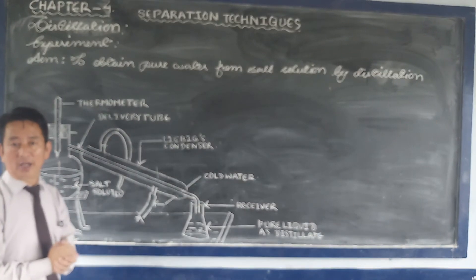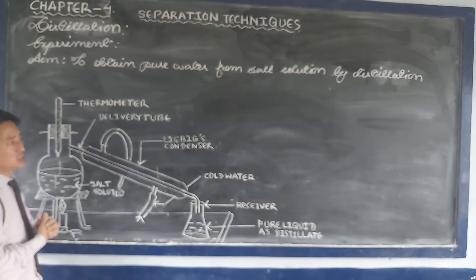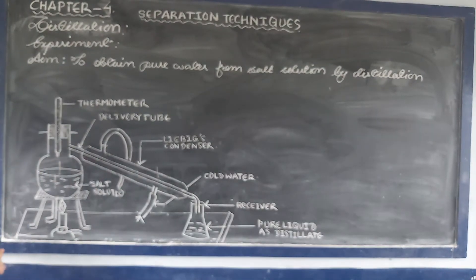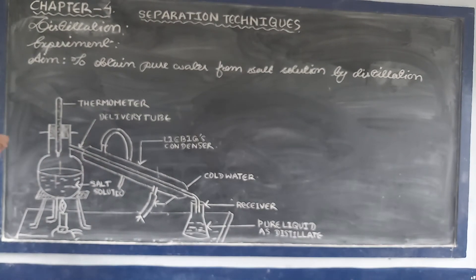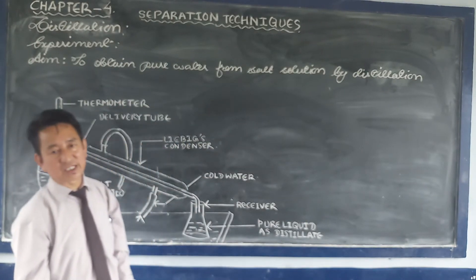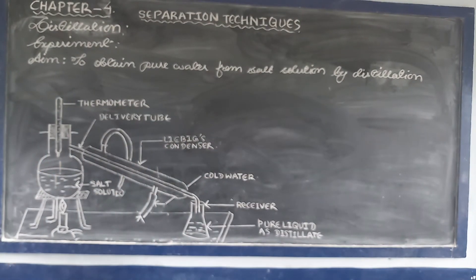I want to explain the process of distillation through a simple experiment. To obtain pure water from salt solution by distillation. Apparatus: For this experiment, the apparatus or equipment required are: